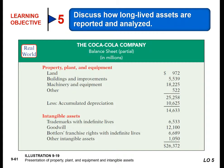Either within the balance sheet or in the notes, there should be disclosure of the balances of the major classes of assets, such as land, buildings and improvements, machinery and equipment, and the accumulated depreciation by major class or in total. What we might see is a single line that says property, plants, and equipment net of $14,633, with all the additional detail either in a separate schedule or written out narratively in the notes to the financial statements. This is similar to what we'd also find with intangible assets.